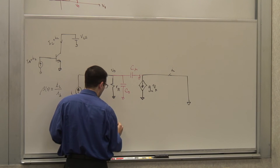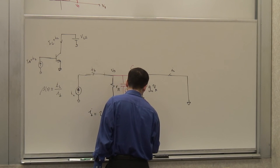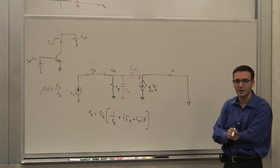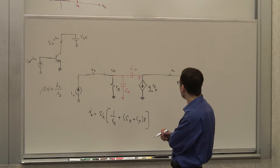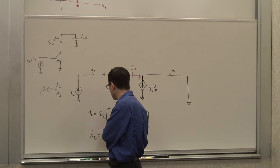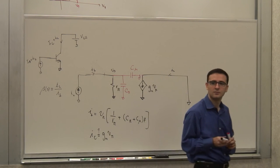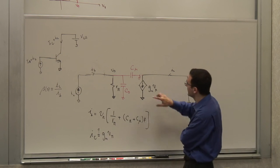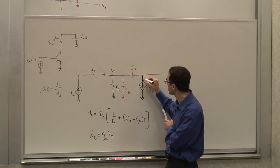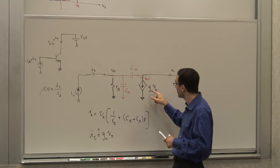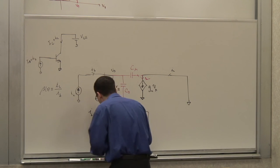So ib = Vpi times (1/Rpi + j·ω·(Cpi + Cmu)). And ic ≈ gm Vpi (Cmu current is negligible compared to gm Vpi). Therefore, beta(s) = ic/ib = gm divided by (1/Rpi + (Cpi+Cmu)·s). Since Rpi = beta/gm, this becomes beta_0 divided by (1 + (beta_0/gm)·(Cpi+Cmu)·s).